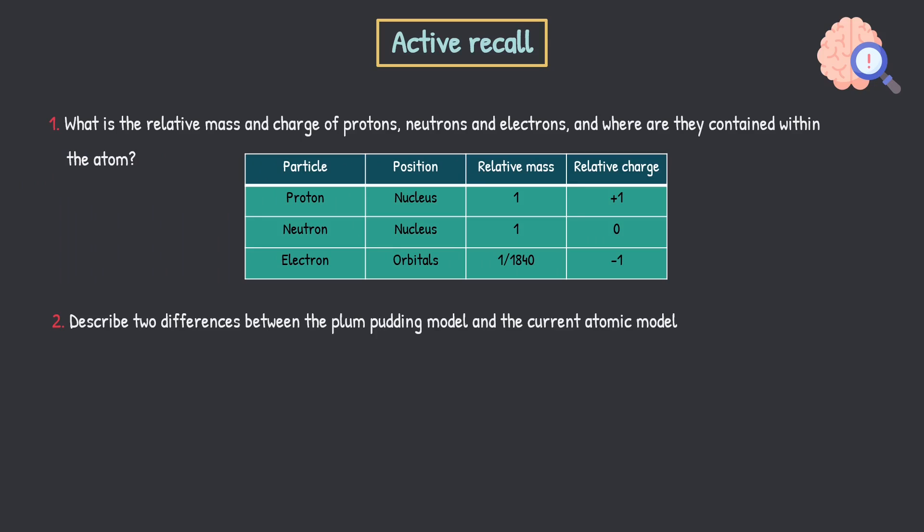So sticking that cheeky table back up, we have proton, neutron, electron. Protons and neutrons are both in the nucleus and electrons are within orbitals. Done. Relative mass, 1, 1. And then we have a fraction here, 1 over 1840. The relative charges are positive 1, 0 or neutral, and then minus 1 for the electron. Easy stuff there. Hopefully you guys got that right.